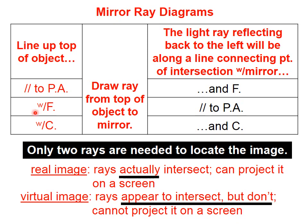Rule number two: start out on a line towards the focal point. When you hit the mirror, bounce back parallel to the principal axis. And when you line up the top of the object with the center of curvature and head towards the mirror, when you bounce back, you bounce your reflected ray back along that same line.